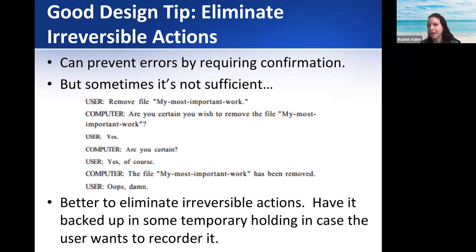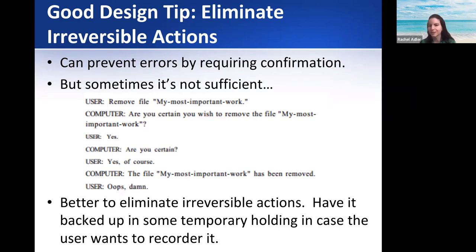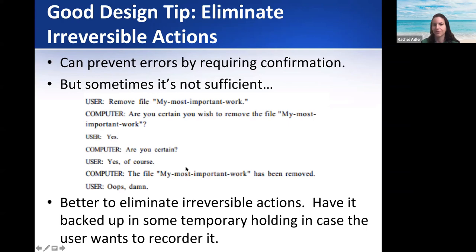Sometimes you can prevent errors by requiring confirmation — like 'are you sure?' and 'are you really sure?' But people will still make mistakes, so even with those confirmations, you have to have some way to allow people to recover, to go back. When you're designing something, you have in mind that users are going to make mistakes — they're going to press the button they're not supposed to press, they're going to delete something. Having warnings is good to prevent it, but also having a way to recover is important.